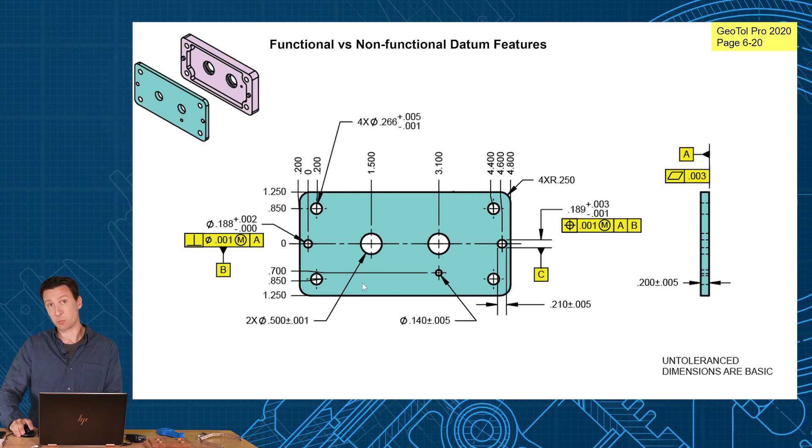One of the more critical relationships we need remember is these two holes in the center. We need these two holes critically aligned to the two holes on the purple part. So how do we do that? We locate everything to our datum features.